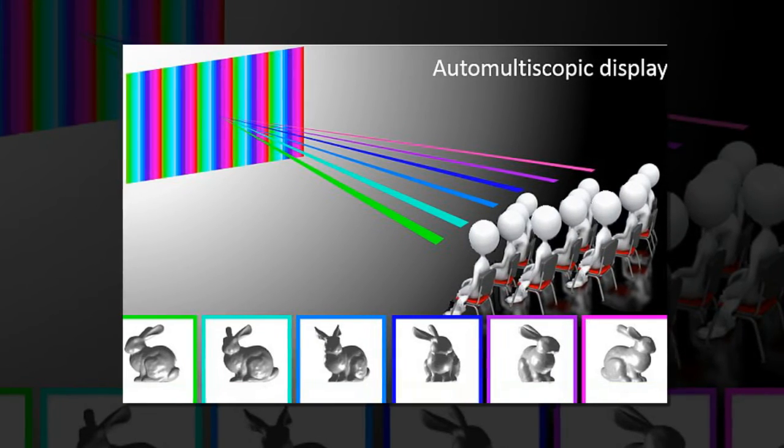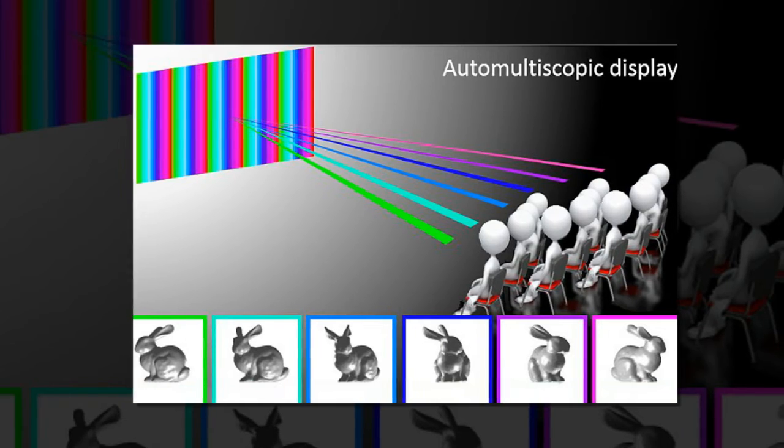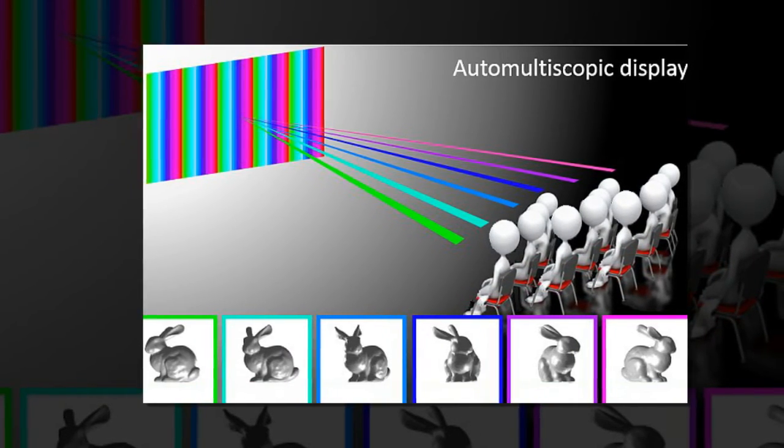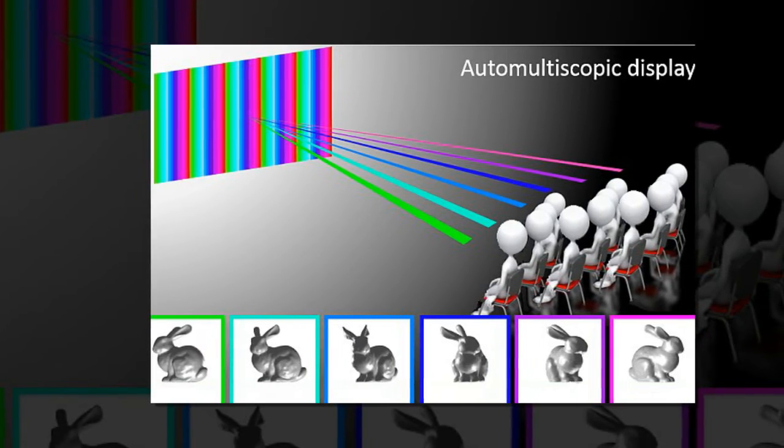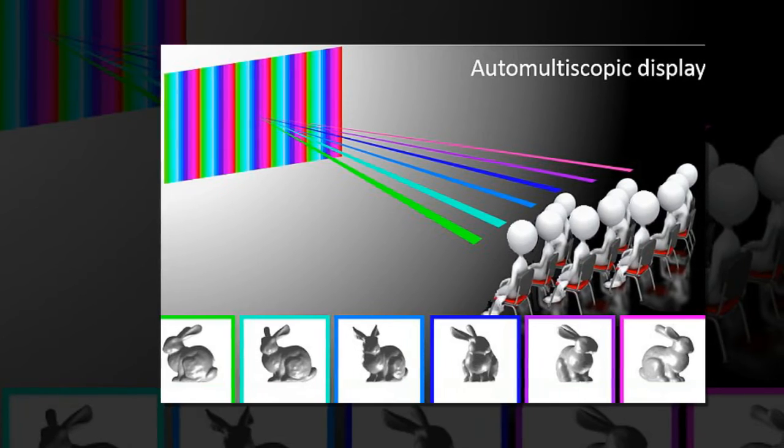The vertical lenslets are cylindrical lenslets designed to refract the vertical component of the rays toward the slanted mirrors. The slanted mirrors replace the slanted barrier, which, like the original barriers, provides rays from each viewer row with the right disparity.